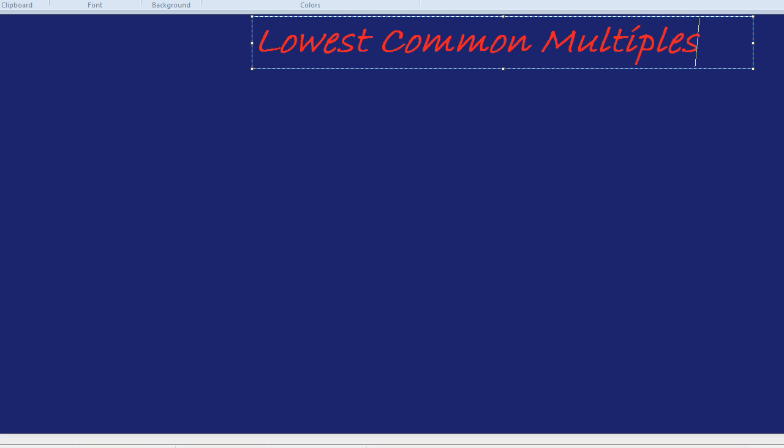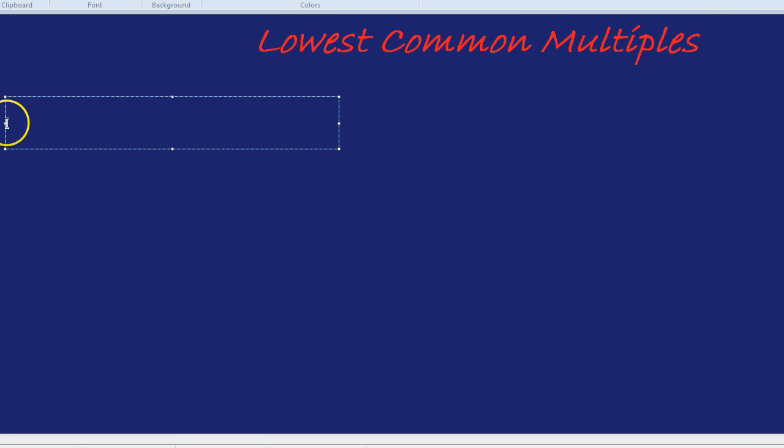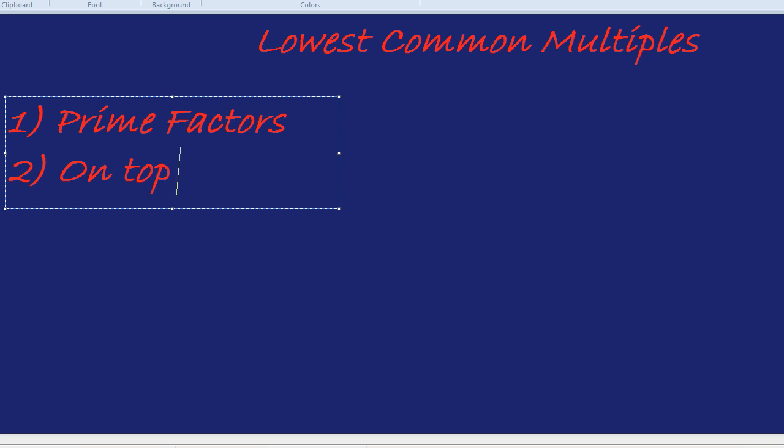Just to recap from another video on highest common factors, first we do a prime factor tree to break it into its prime factors. Second, we write those prime factors on top of each other in order, so the threes on top of the threes, the twos on top of the twos, etc.